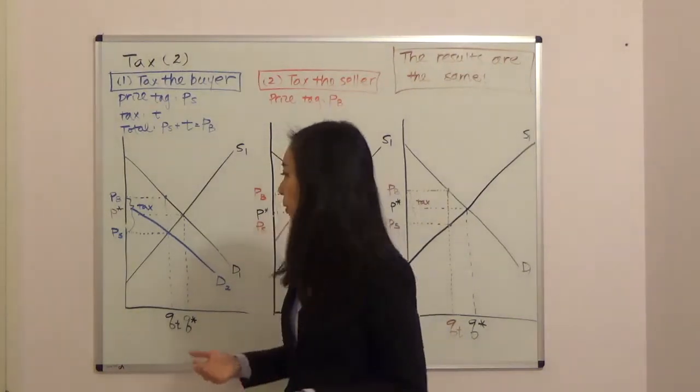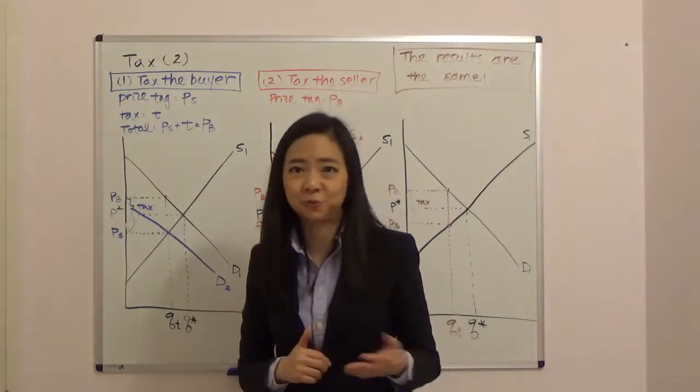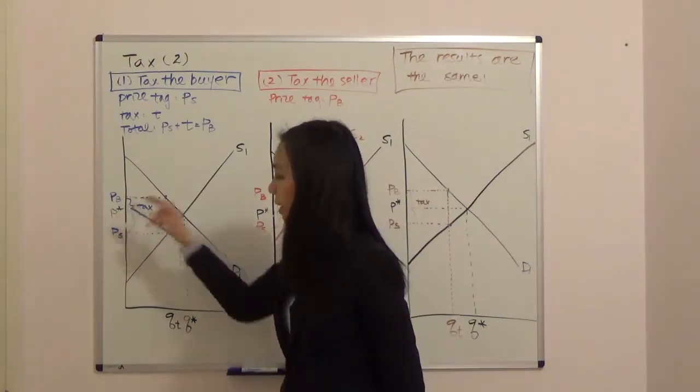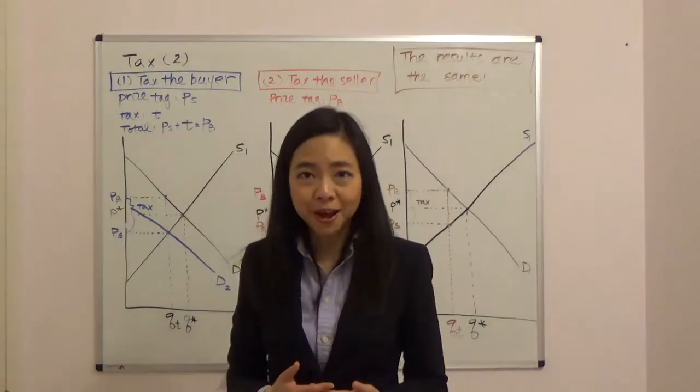So you can see without tax, the price paid by the buyer is exactly the price received by the seller because there's no tax. So that price was P star. Now suppose the government imposed a tax on the buyer.